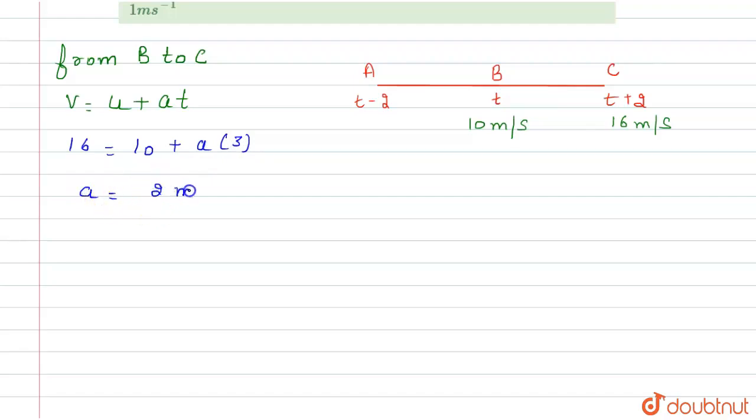Now we apply the first equation of motion from A to B. From point A to point B, we write v equals u plus at.